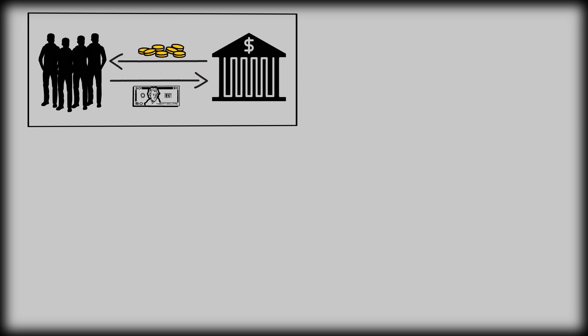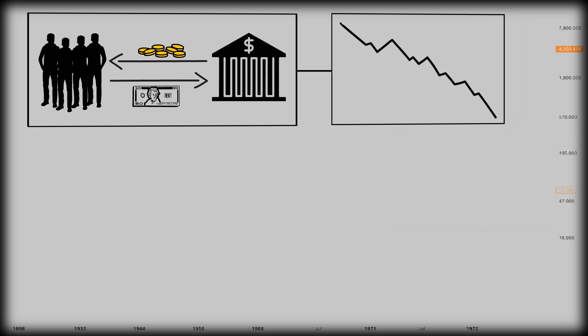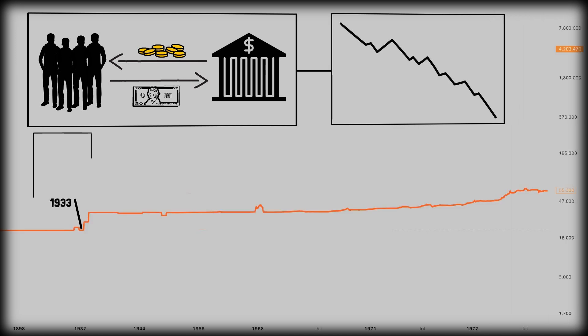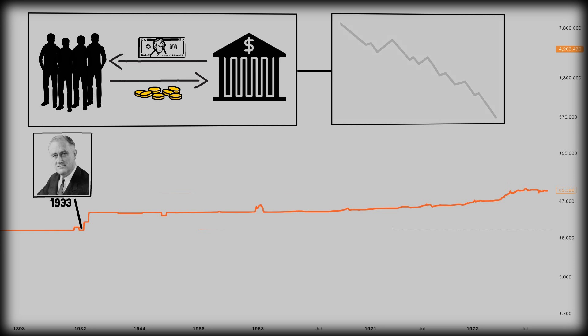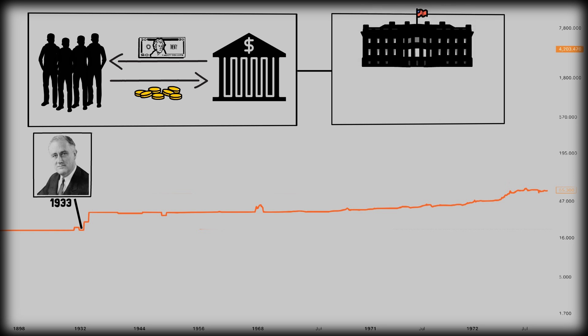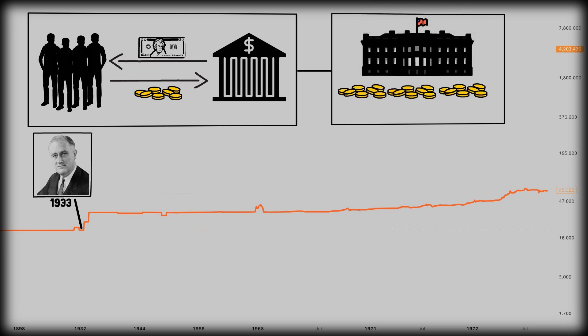When people lost trust in banks, they withdrew money and demanded gold coins instead. This caused gold reserves — the foundation of the monetary system — to drain rapidly, threatening to collapse the banking system. In 1933, FDR closed banks for weeks to stop the panic withdrawals, banned private gold ownership, and required people to exchange gold for dollars at the official price of $20 per ounce. This allowed the government to reclaim gold reserves and control the monetary supply.